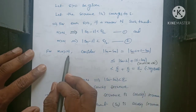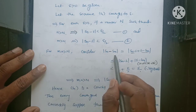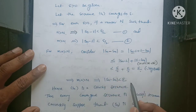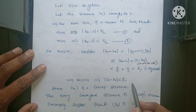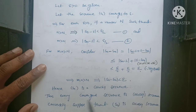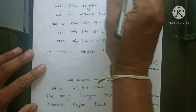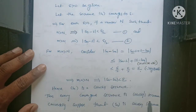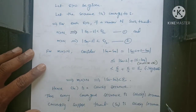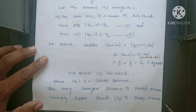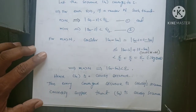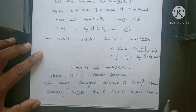So for M, N greater than capital N, mod(Sn minus Sm) is less than epsilon. This is the condition for a Cauchy sequence. Hence Sn is a Cauchy sequence. Thus, every convergent sequence is a Cauchy sequence.